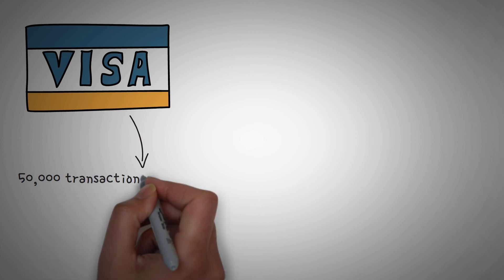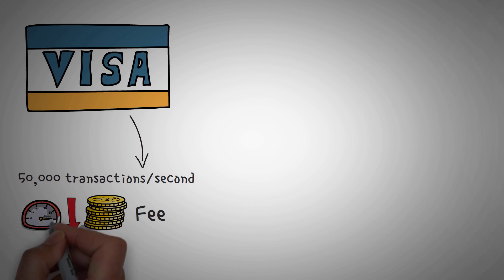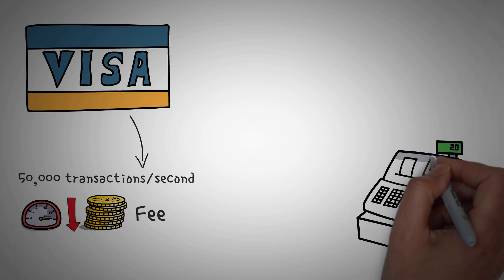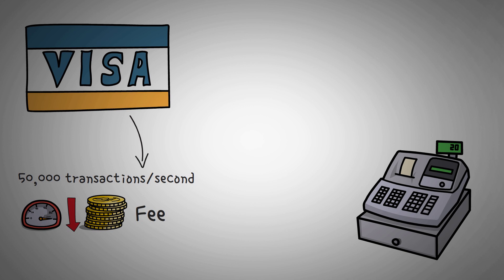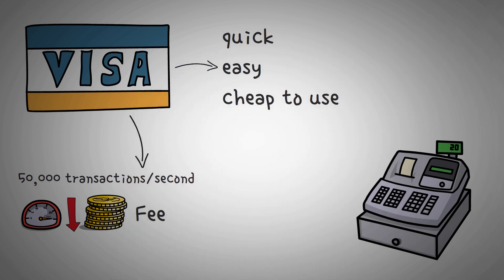Visa on the other hand, which has been used for a few years now at major retailers, can process up to over 50,000 transactions a second and their fees are very low. They are also immediate. This is a reason you can pull your card out and swipe it at the grocery store or your local coffee shop. It's quick, it's easy, and it's cheap to use. That is the major problem that the Lightning Network tries to solve though.